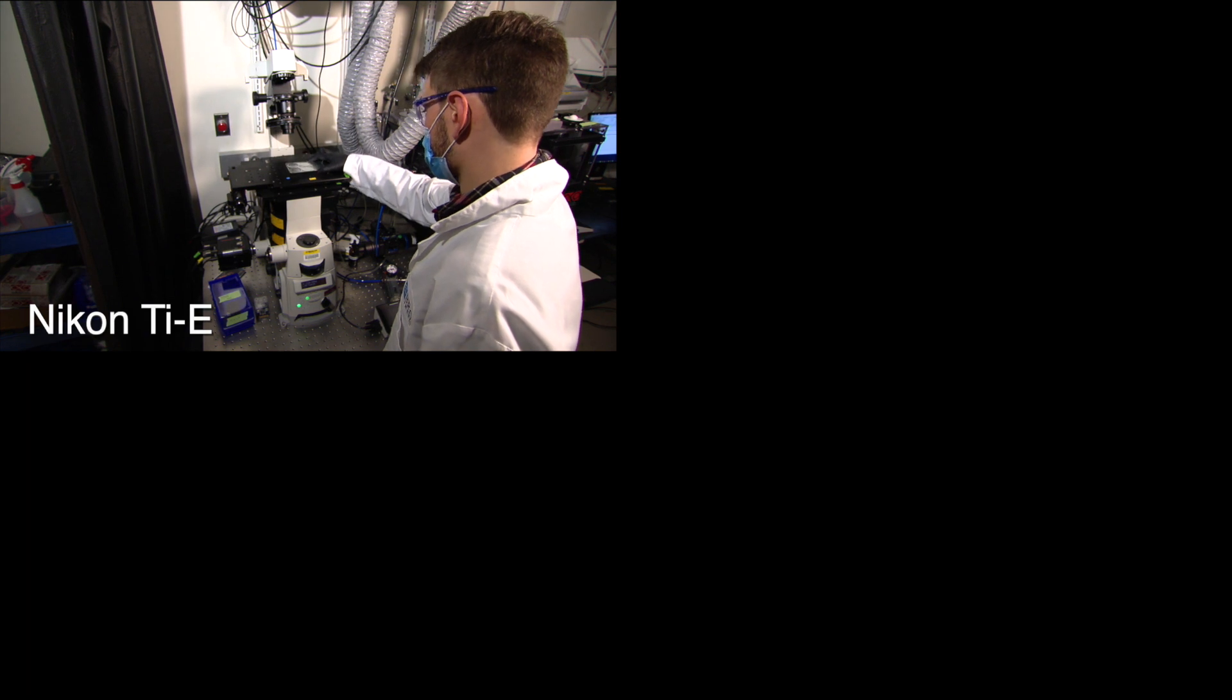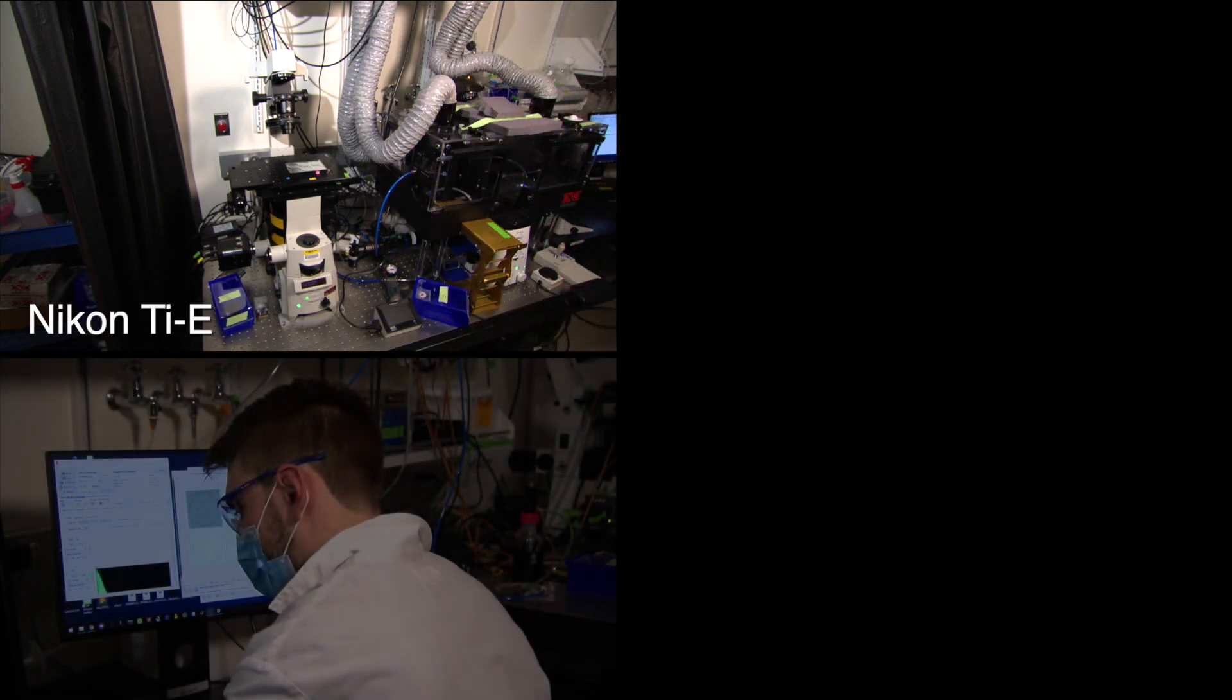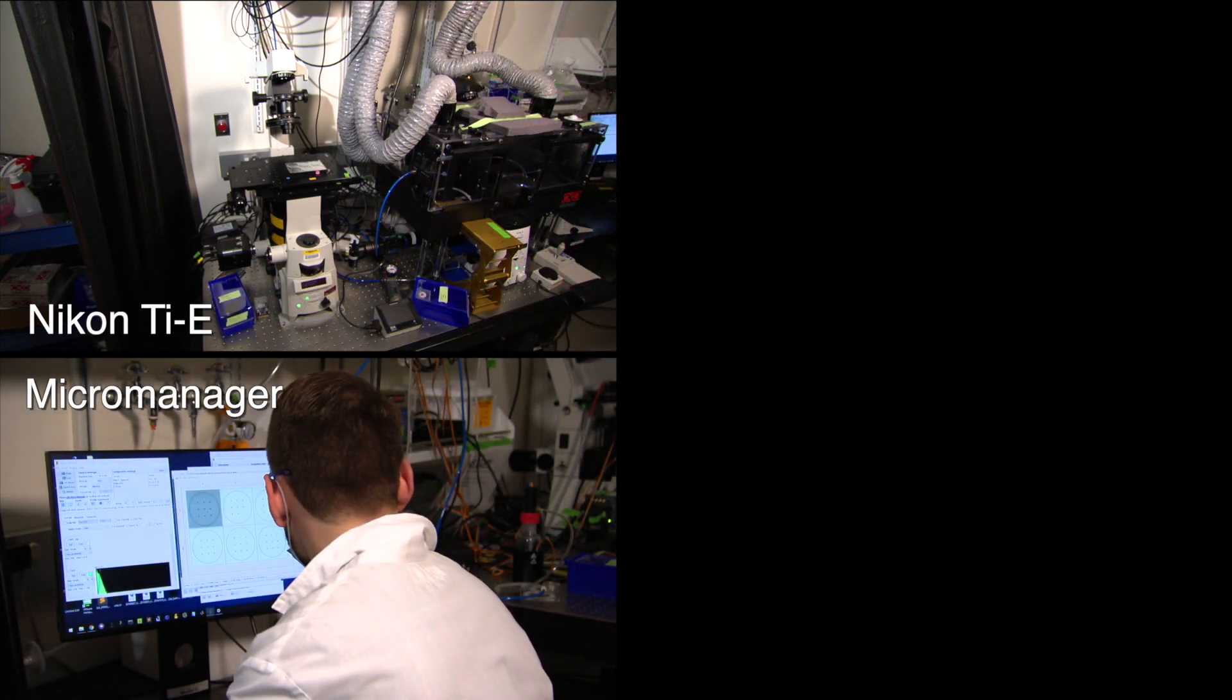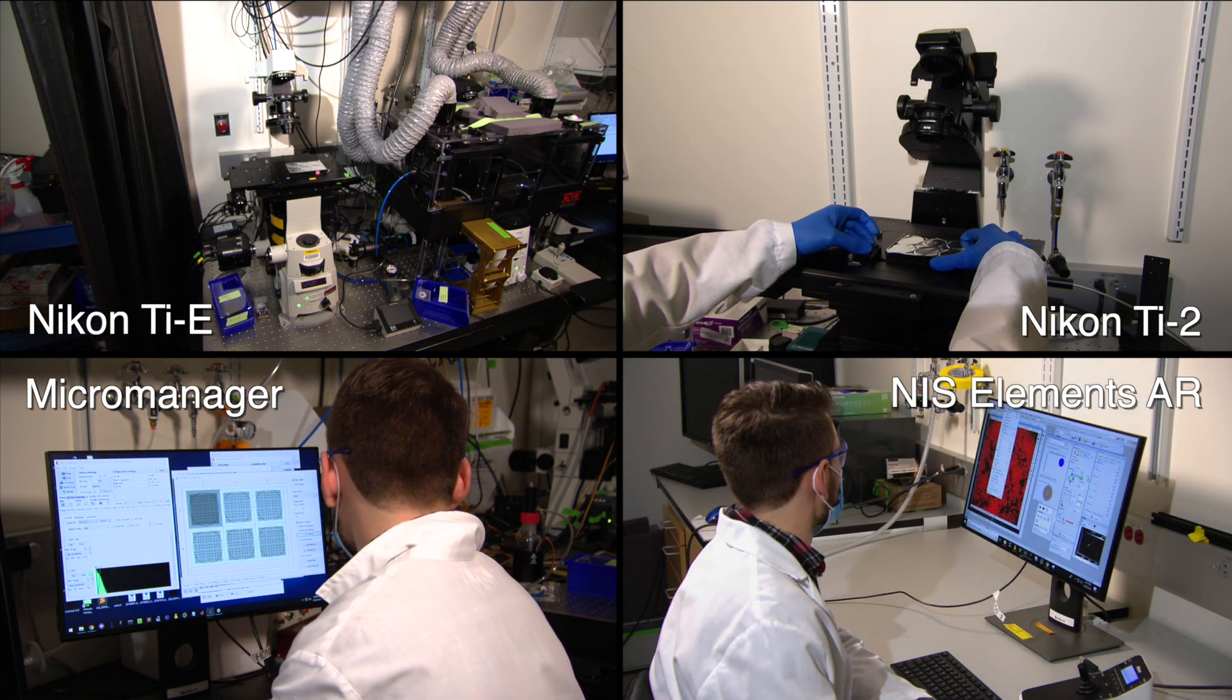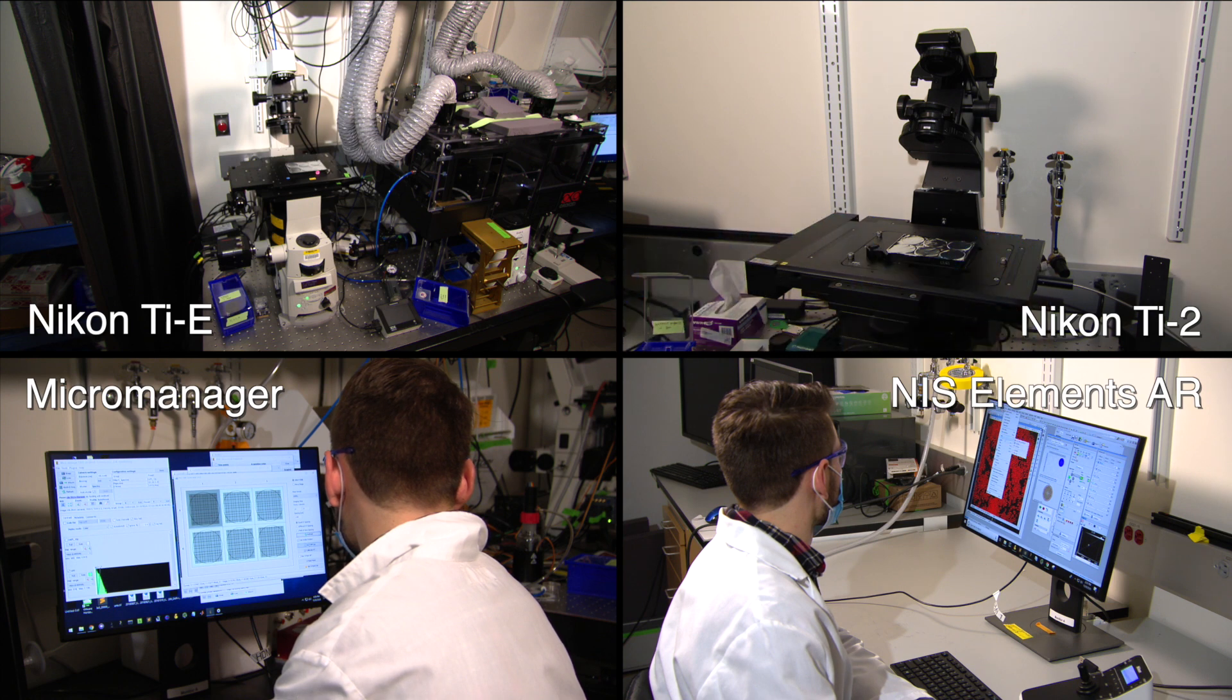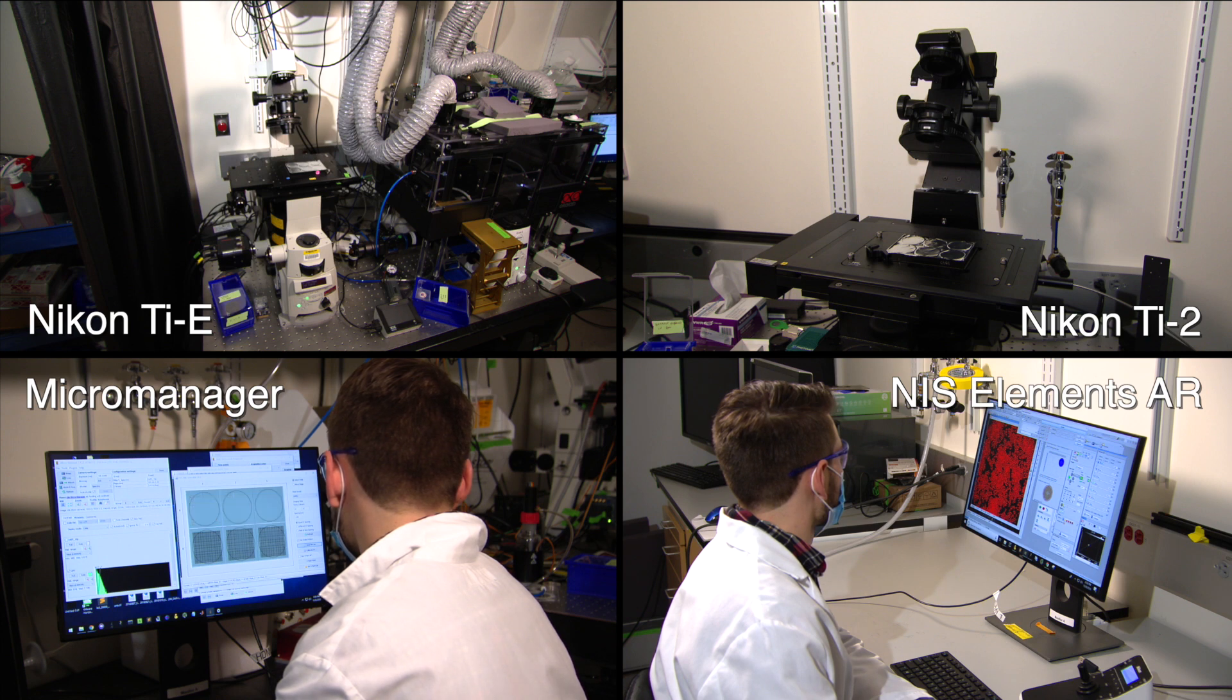Here, we showcase two different workflows. One on a Nikon TiE microscope using Micromanager for data acquisition and a second on a Nikon Ti2 microscope using NIS elements to control the imaging hardware. The first reflects the system we used in the original optical pooled screening manuscript, while the second is an updated system with improved imaging throughput.